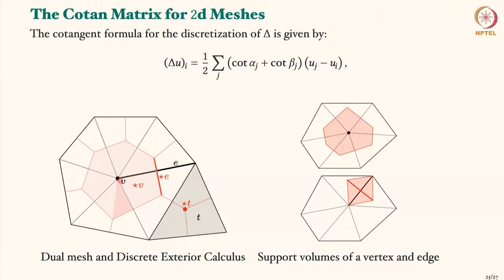For this vertex V, this red-colored patch is the dual region — this is the dual region for this vertex. For this edge, it's this edge joining these Voronoi points — the Voronoi dual region points. So this edge's dual is a boundary of the Voronoi region, as you can see here. For edge E, star E is its dual.